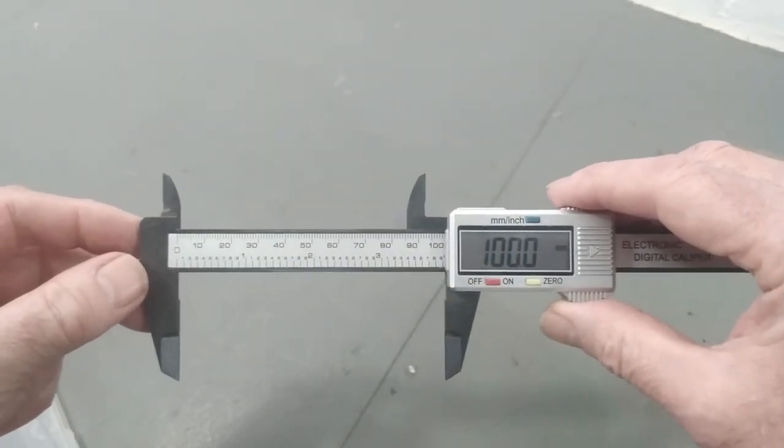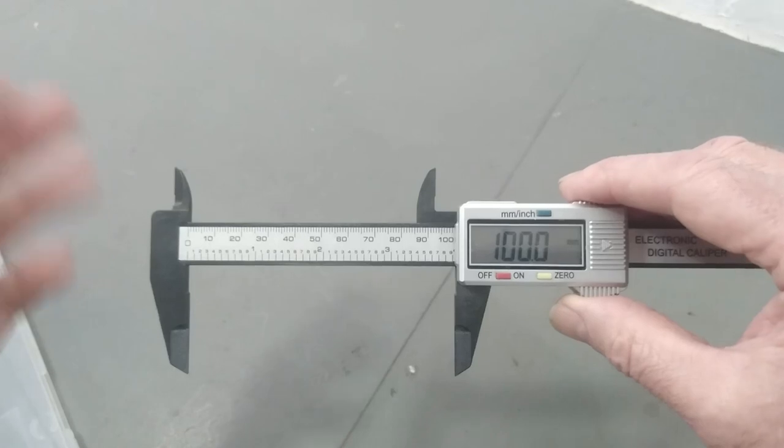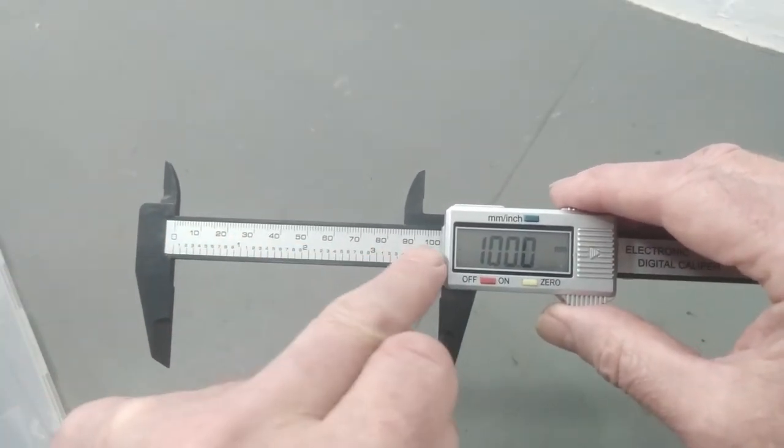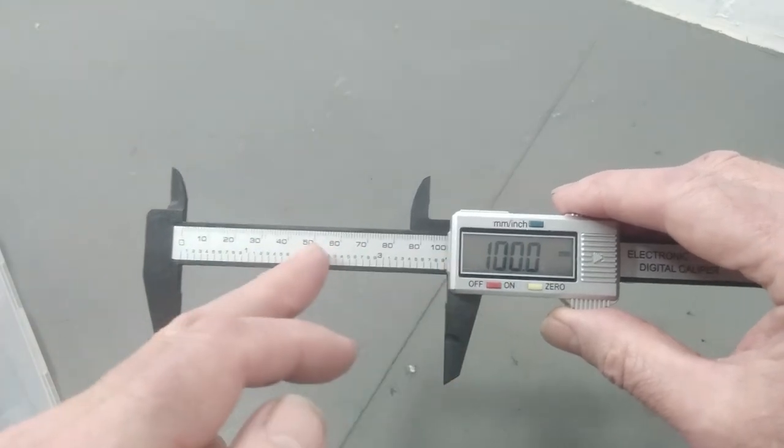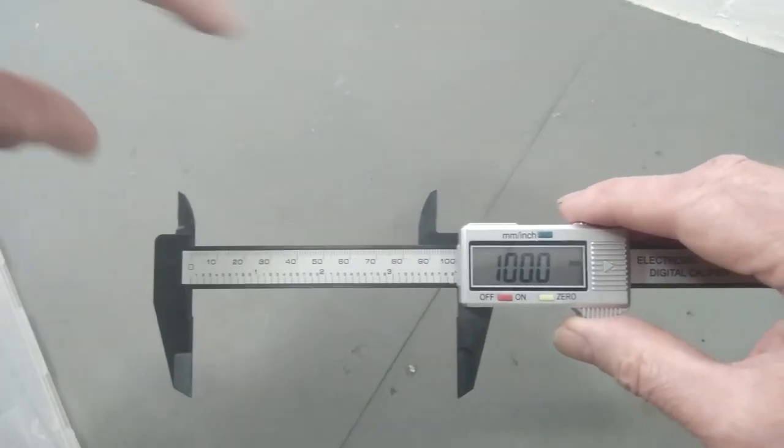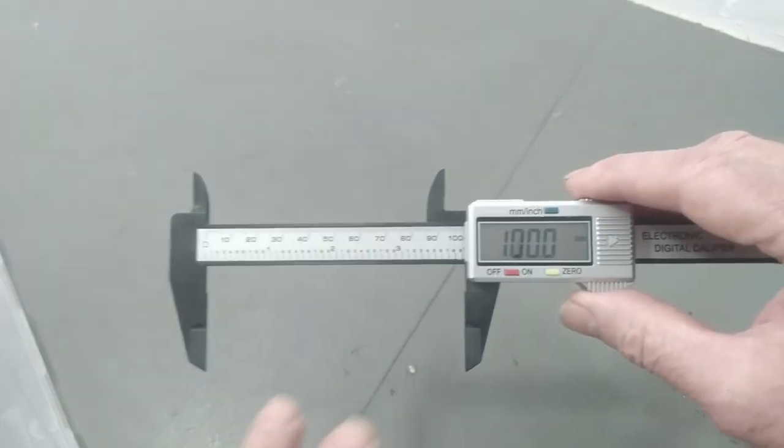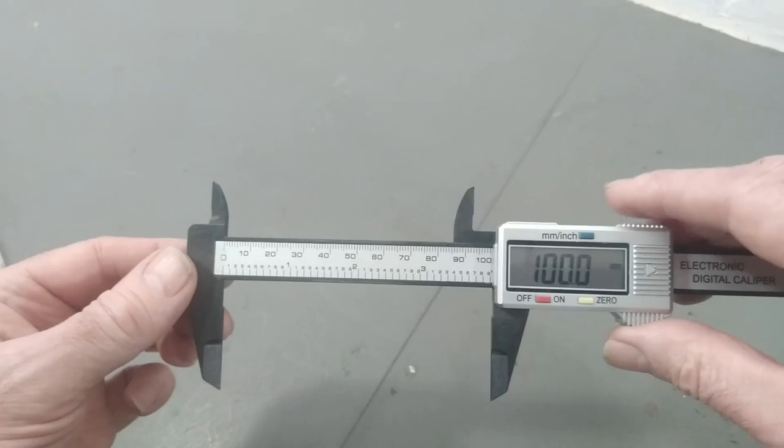Easy to read though. Well you don't even have to know how to read them. There you go. There's 100mm, so it's showing 100mm there as well. That internal measurement is 100mm and this external measurement is 100mm.